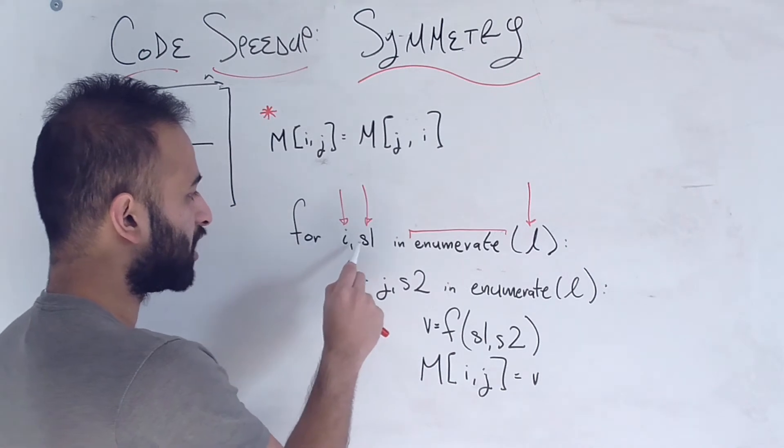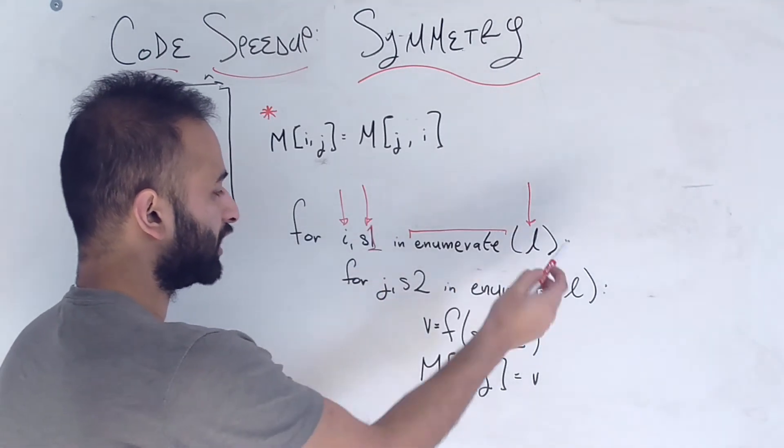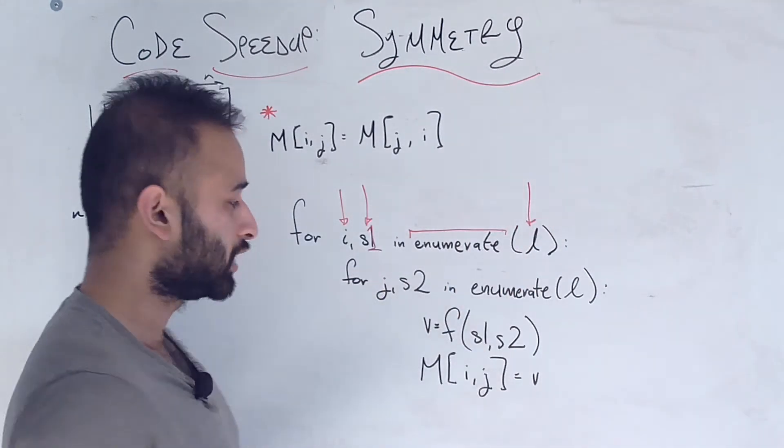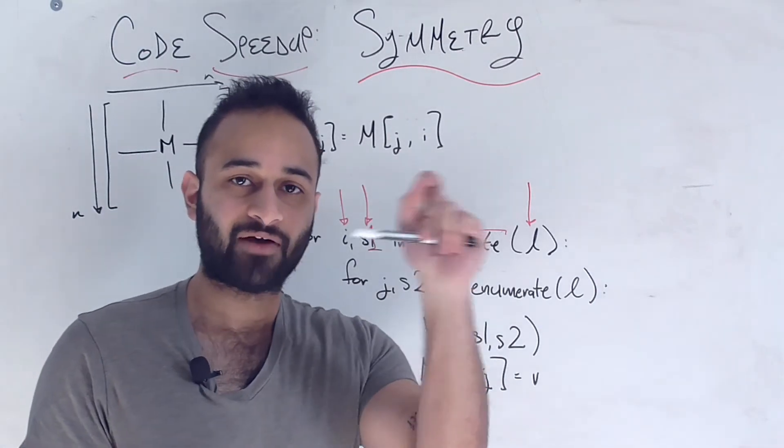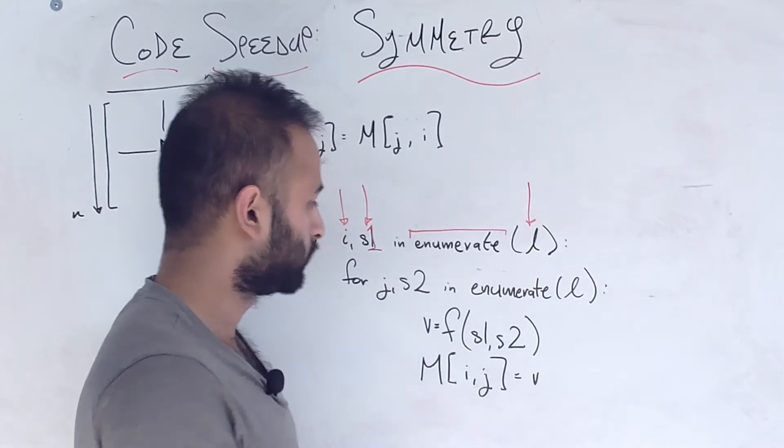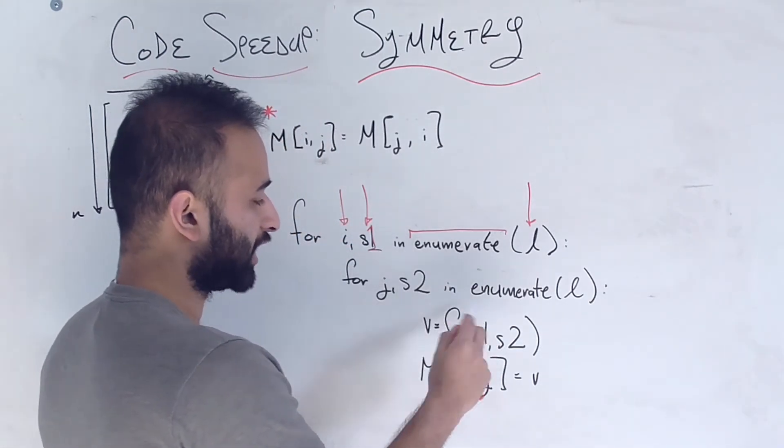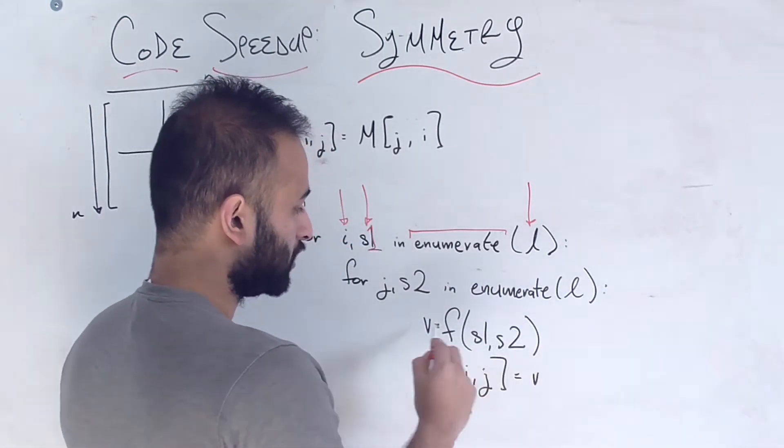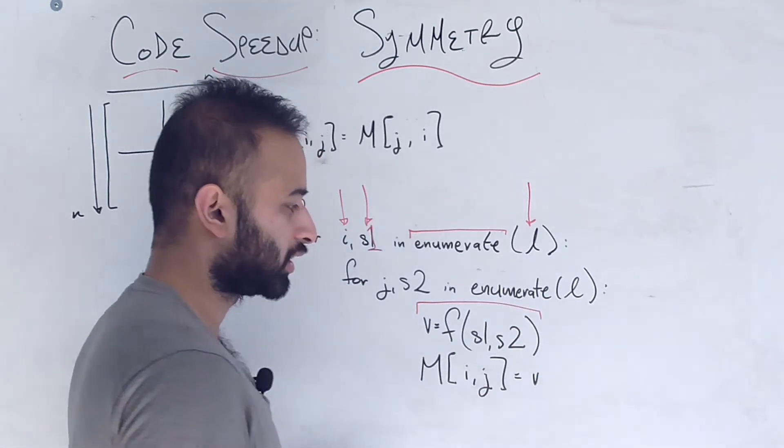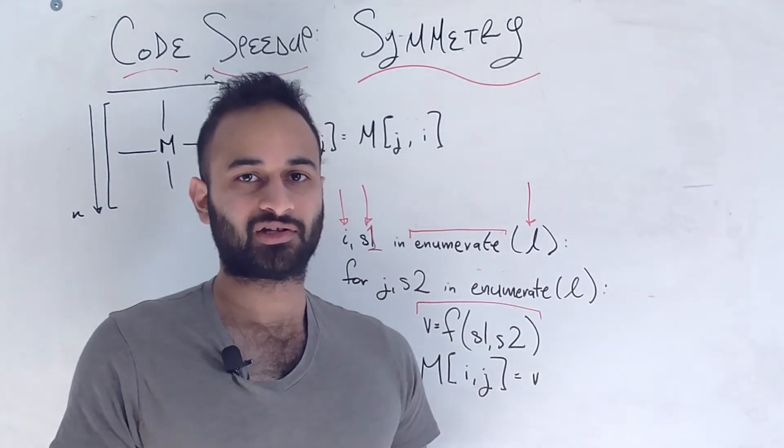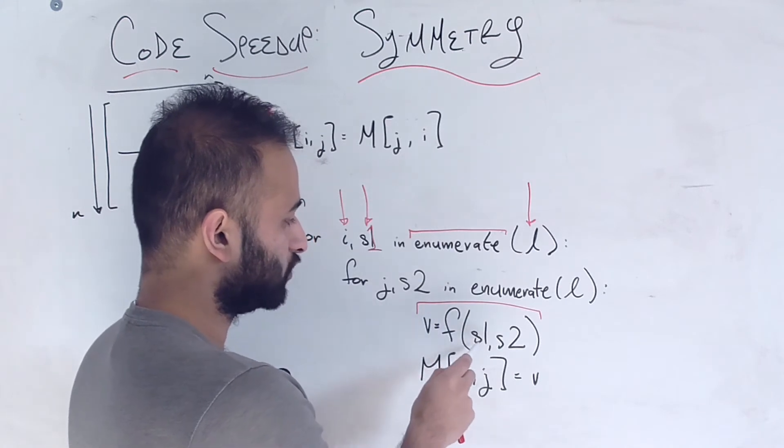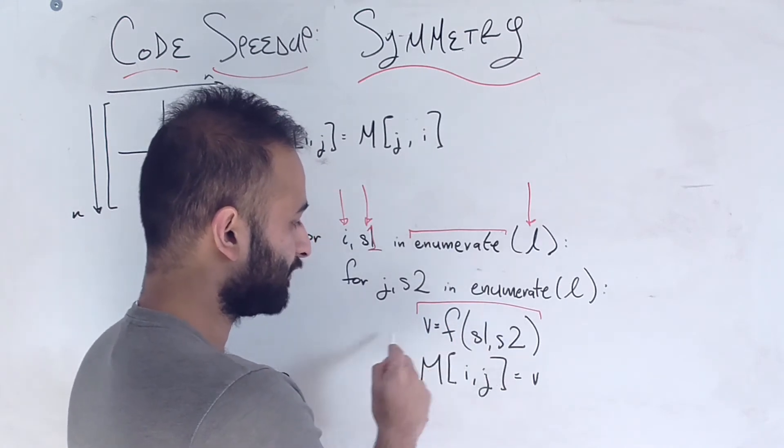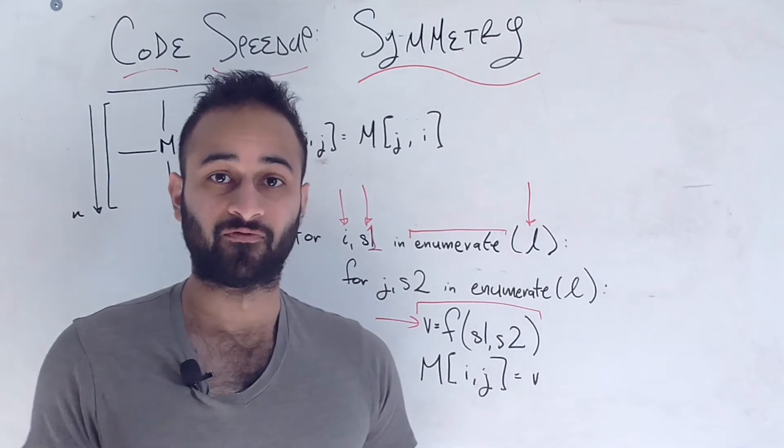So we say for i comma s1 and enumerate this list of students or whatever. The second for loop because we want to say what's the similarity between every student and every other student. We'll say j comma s2 again and enumerate the same list. We're going to calculate the similarity score. This video is not really about how to calculate similarity score. So just say it's given by some function f. So we put student 1 and student 2 into the function f and we get the similarity score v.